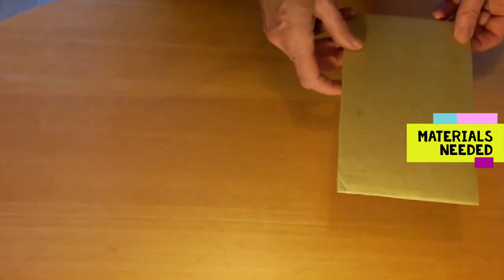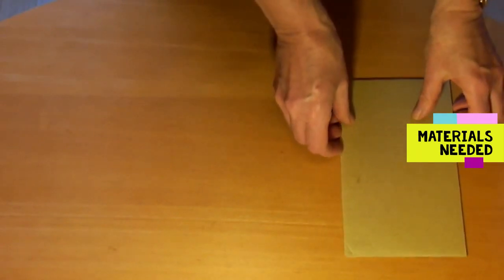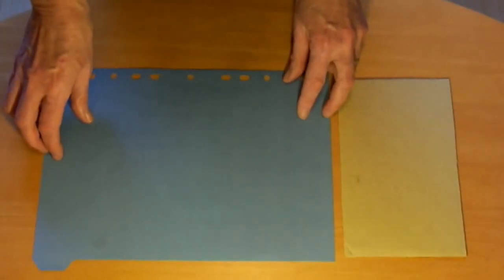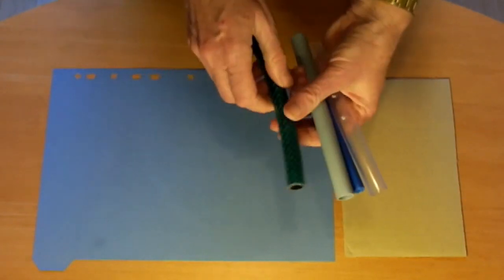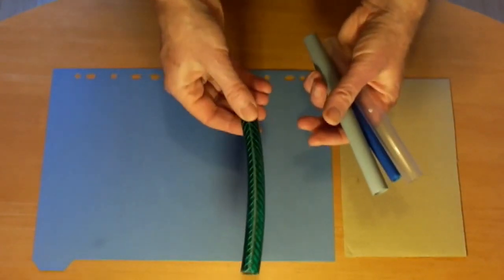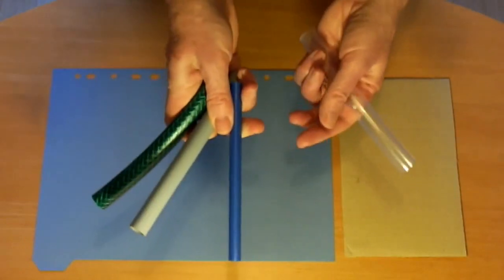Okay, so this is what you need. A piece of corrugated cardboard, a sheet of thin card, a piece of plastic tube about 16 centimeters long. This is garden hose. This is the tube from a felt tip pen.